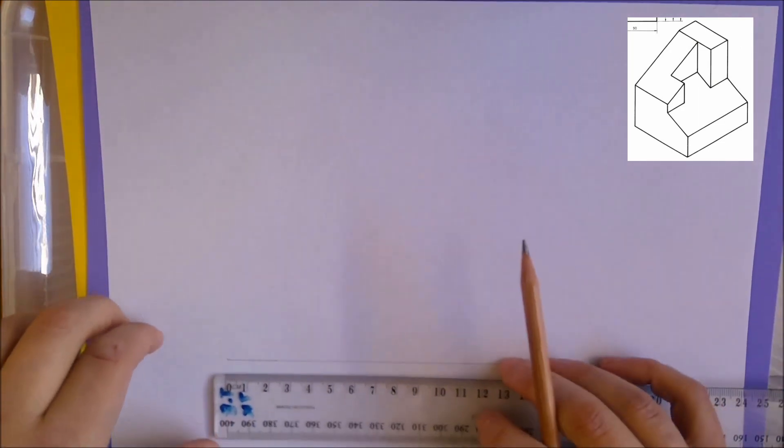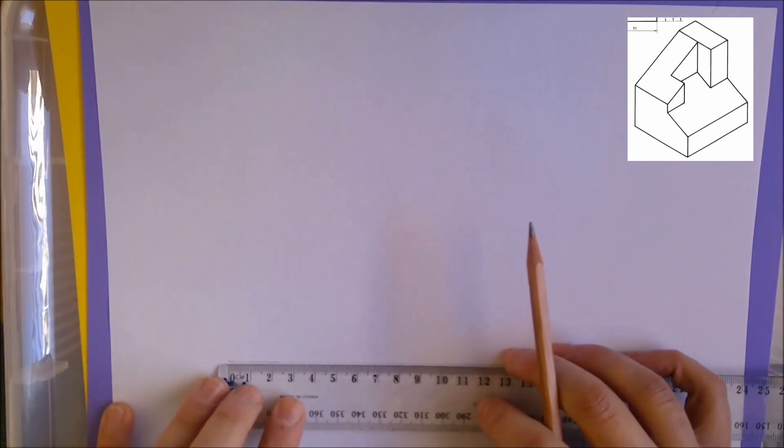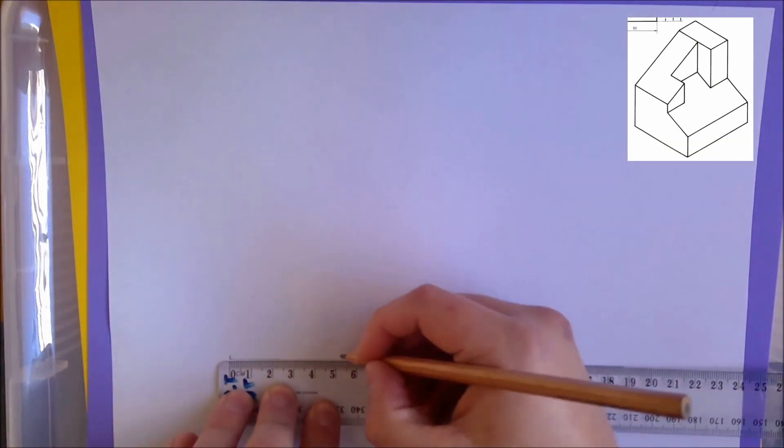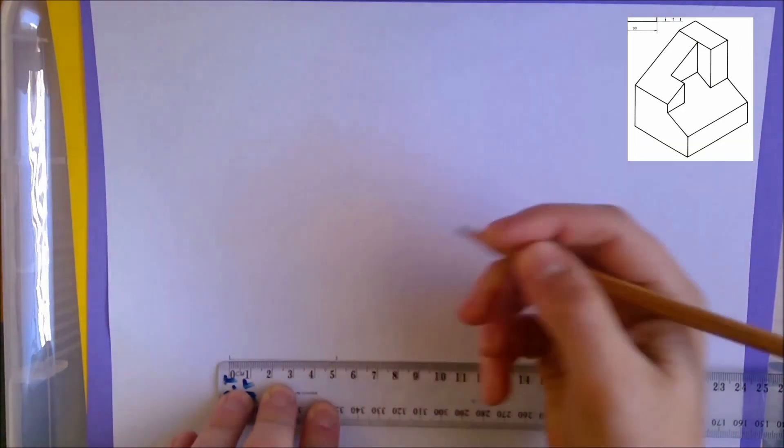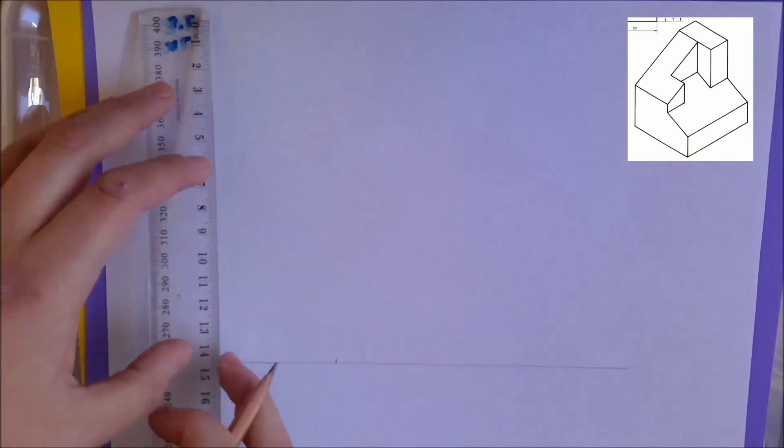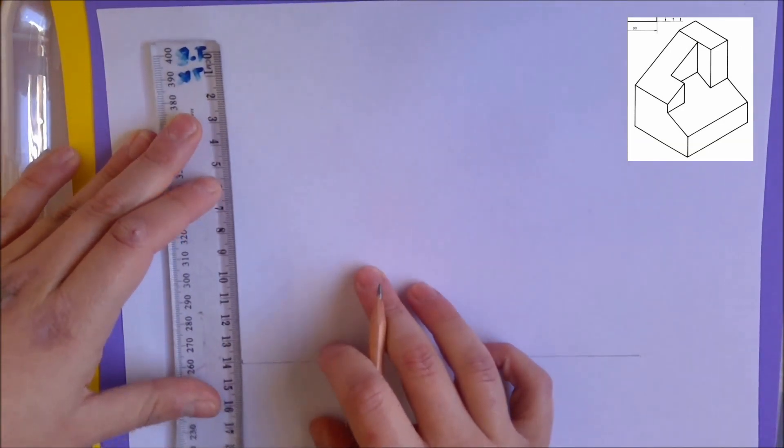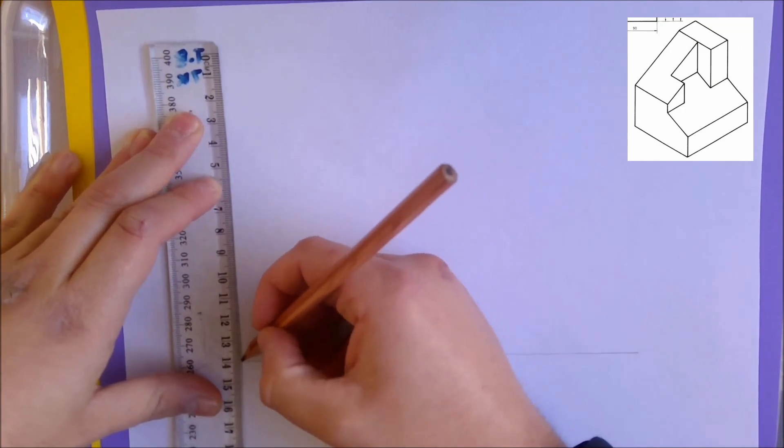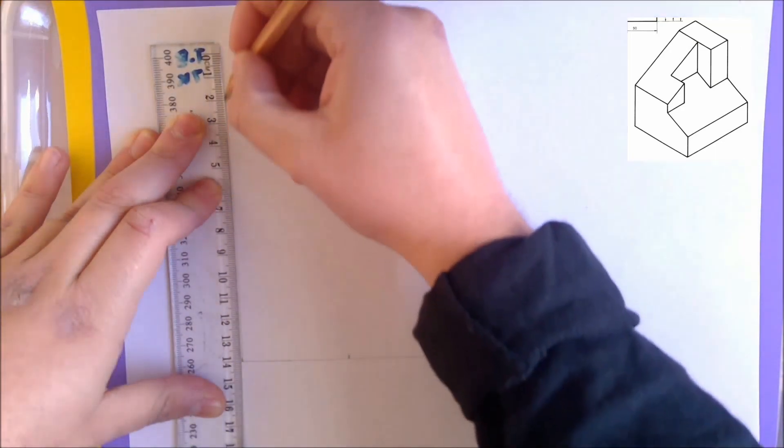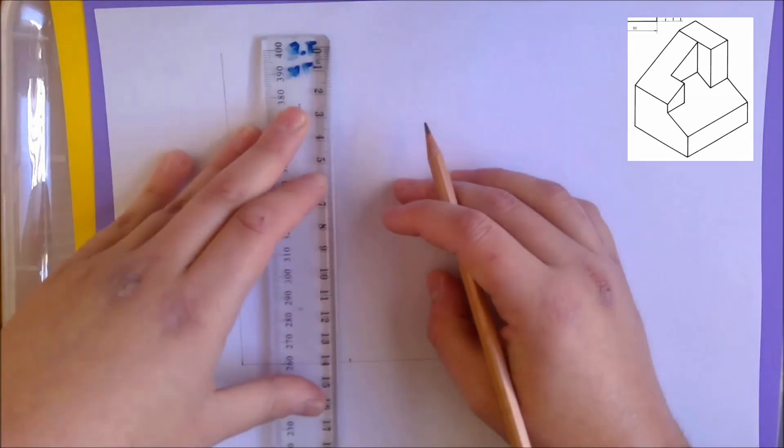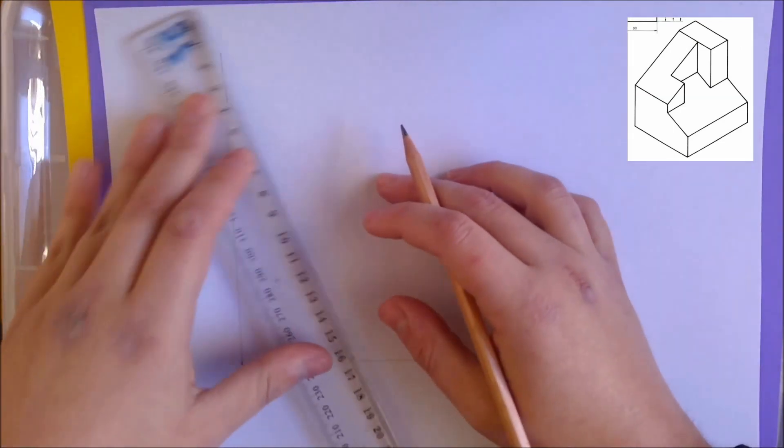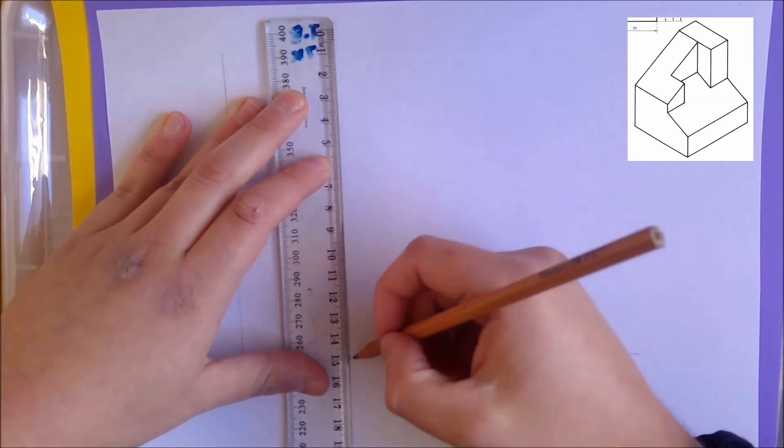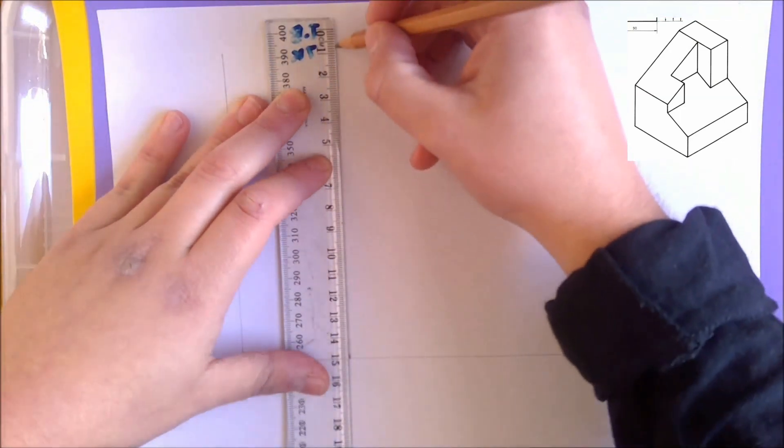I'm going to start with my front view. My front view is going to be five centimeters, so I'm just going to mark that on the page. I'm then going to rule directly up probably for about 10 to 15 centimeters, directly up, and I'm going to do the same with this line as well. And this is just going to help me set up my page for later views that I need to do.